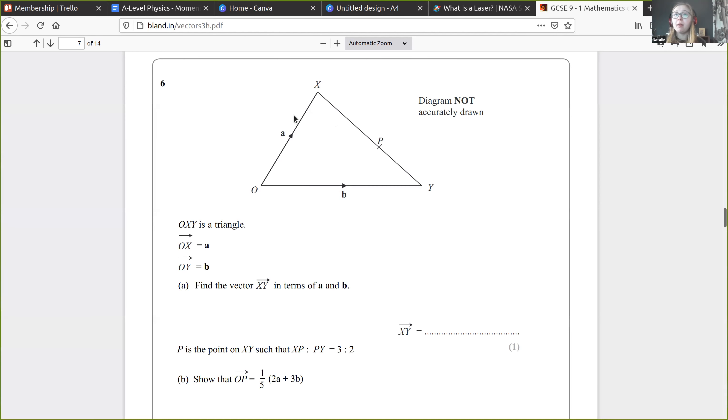To go from X to Y, I'm going minus A plus B. So I can write that as B minus A. We could write it minus A plus B. I just prefer not to have the minus at the front. Now, P is the point on X, Y such that X to P, P to Y is three to two. So this part is three and this part is two in the ratio. Show that O to P is one fifth of two A plus three B. Well, X to P is going to be three fifths of X to Y, and P to Y is going to be two fifths of X to Y.